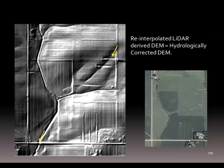Now we've corrected the digital dam and we're able to have a hydrologically corrected DEM. We've got the water course in the right place and the digital dam broken, so water will now flow correctly on the landscape.